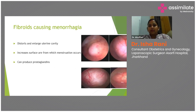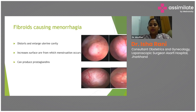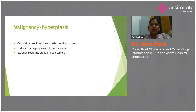Fibroid-caused menorrhagia occurs because it distorts and enlarges the uterine cavity, raising the surface area from which menstruation occurs, and it produces endogenous prostaglandins which act locally to prevent vasoconstriction during menstruation, hence leading to menorrhagia.